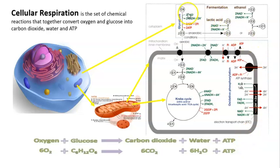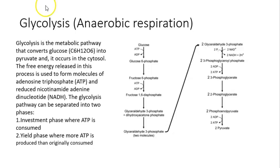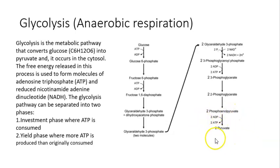The first step is glycolysis, which happens in the cytoplasm. Glycolysis is the metabolic pathway that converts glucose into pyruvate. Through a series of steps, we are going to produce two molecules of pyruvate.